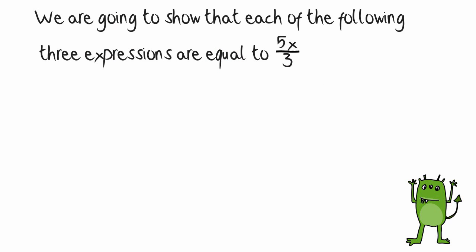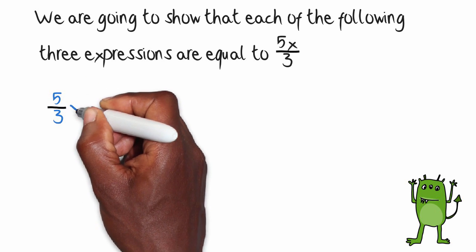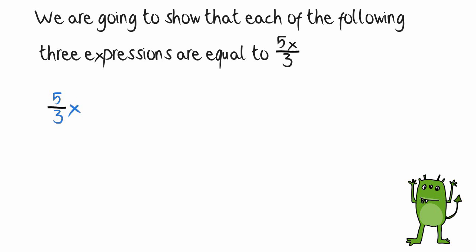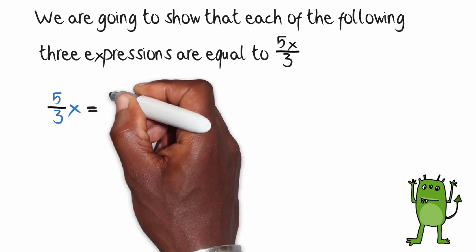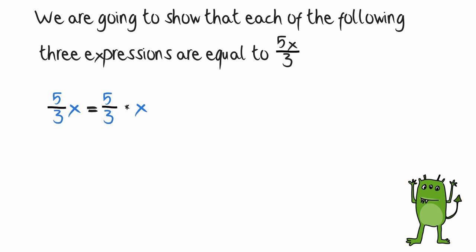We're now going to show that each of the following expressions is equal to the fraction 5x over 3. The first expression we have is 5 thirds x, and we're going to turn that into one fraction. How do we do that? Well, we know that 5 thirds x can be rewritten as 5 thirds times x.